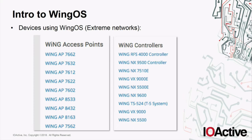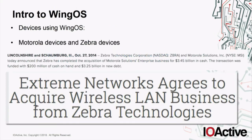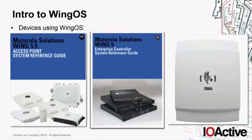Looking at devices using WiNG OS: I didn't get an official list, but based on public information from Extreme Networks' website we can see WAN access points and controllers using this OS, and the list could be even bigger. We also have Motorola devices and Zebra devices, because Motorola created this OS, then Zebra bought that part of the business from Motorola, and then Extreme Networks bought it from Zebra. So we have Motorola access points, Motorola controllers, Zebra devices, and Extreme Networks devices all running this operating system.